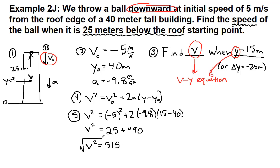So we take the square root of that. And v is equal to plus or minus 22.7 meters per second. Because we took the square root.